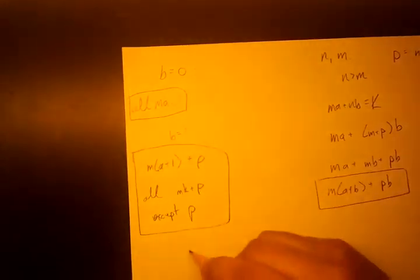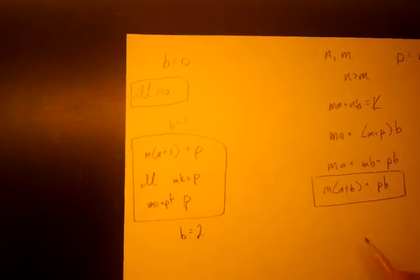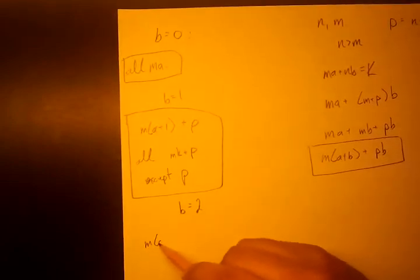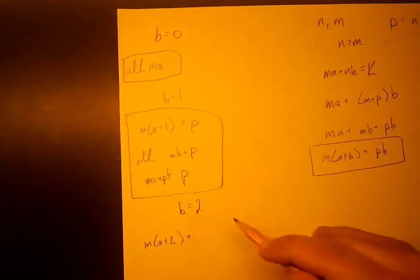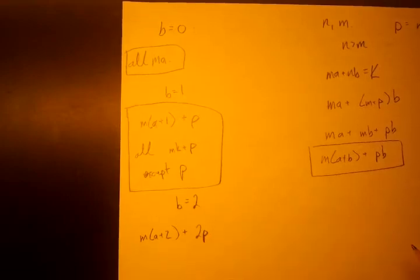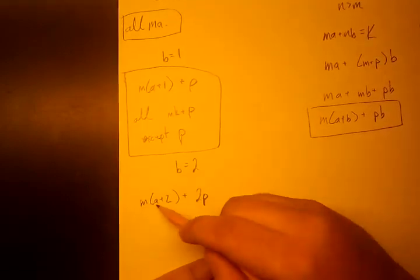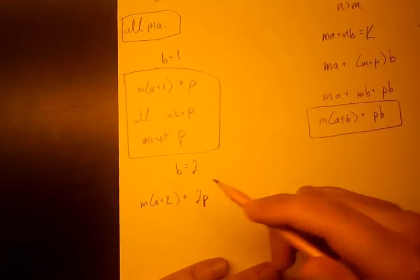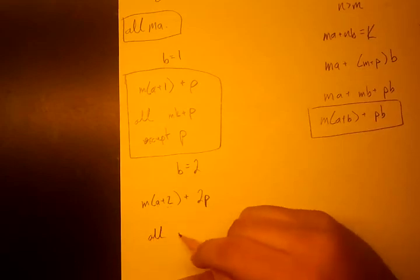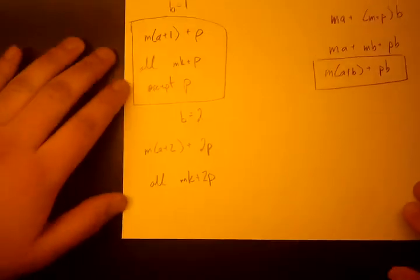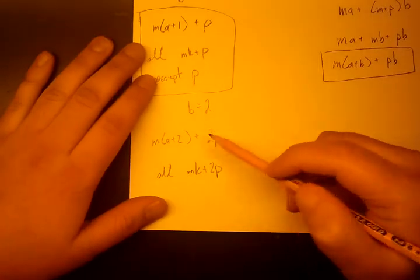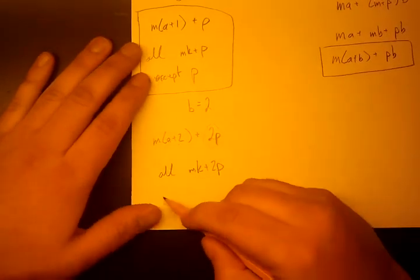And we'll do one more case. Let's say b equals two. So then we get m(a + 2) + 2p. And a + 2 cannot equal zero, cannot equal one. So we can form all m·k + 2p. We can form all of those because 2p is the remainder this time.